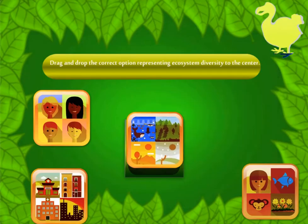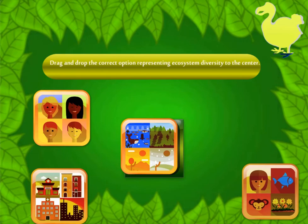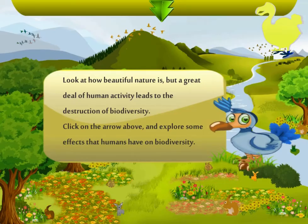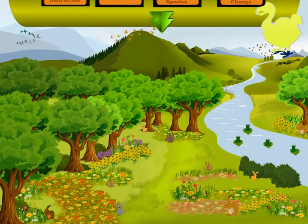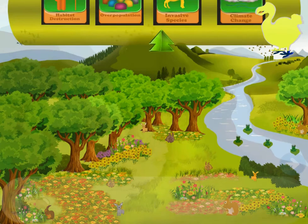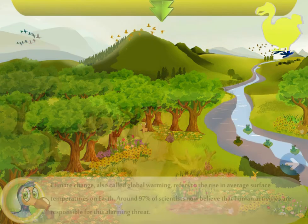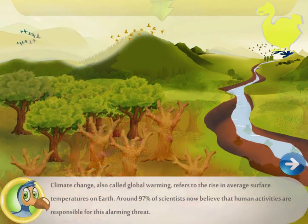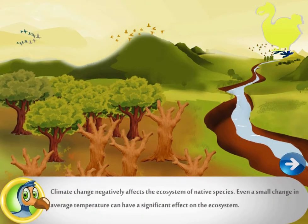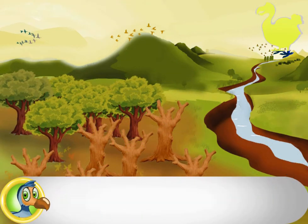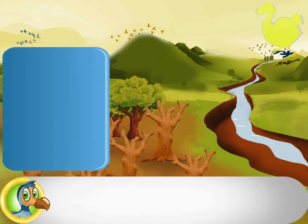In this informative instructional game, say hello again to the dodo bird, an organism that went extinct many years ago. The dodo will try to make a comeback based on your performance during the game. You will learn the factors that affect our ecosystems and biodiversity.